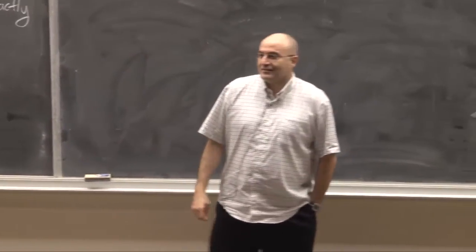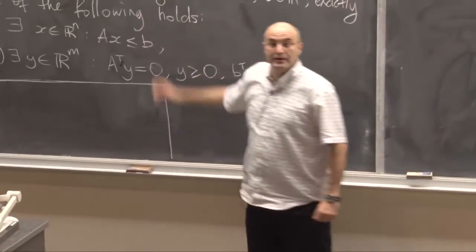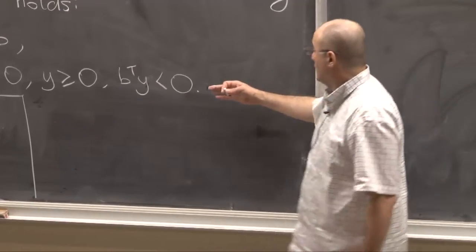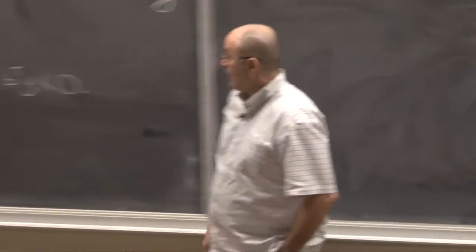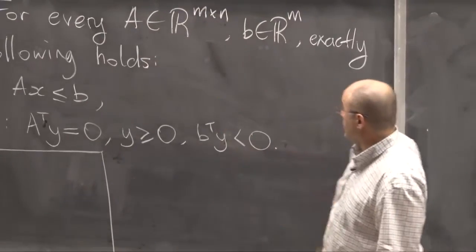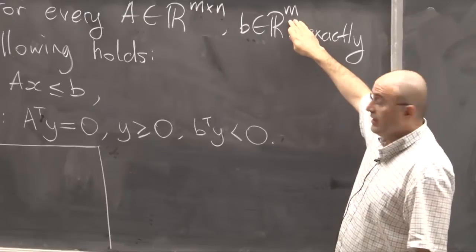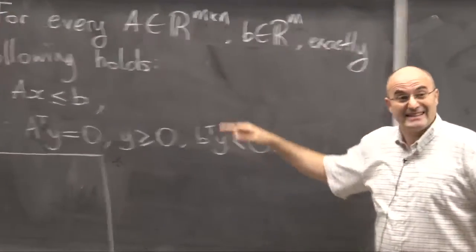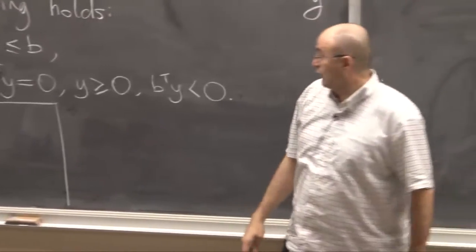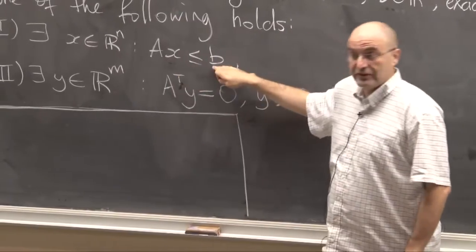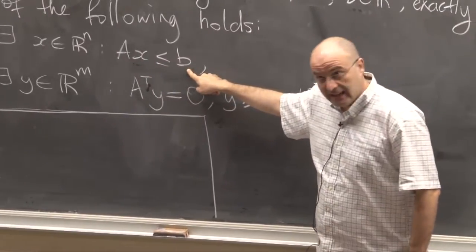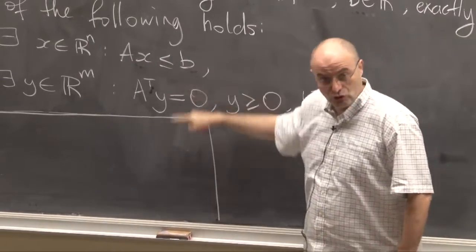Good morning everyone. Last time we covered this theorem and its proof — it was a beautiful theorem that gave us a certificate of unsolvability of systems of linear equalities. Every vector is a column vector. For this theorem, I have a matrix A that's M by N and a column vector B with M entries. The theorem says that for any pair A and B, exactly one of the following holds: either the system of linear inequalities AX ≤ B has a solution — and the inequality between vectors is componentwise.